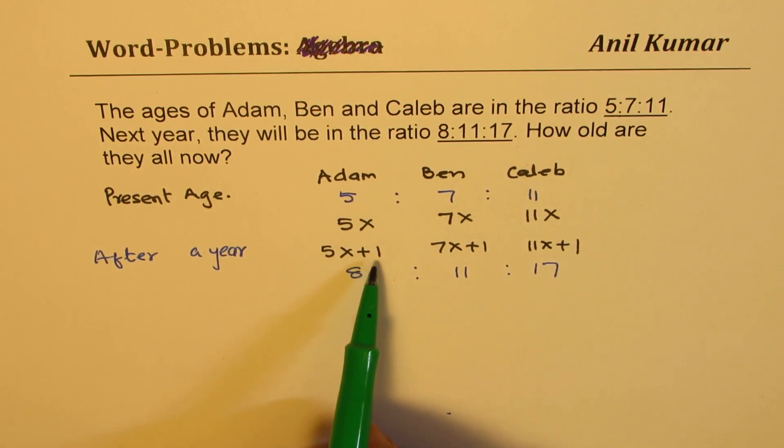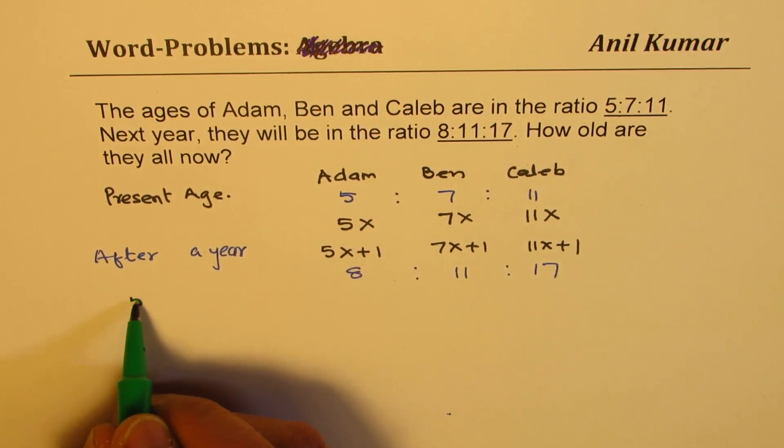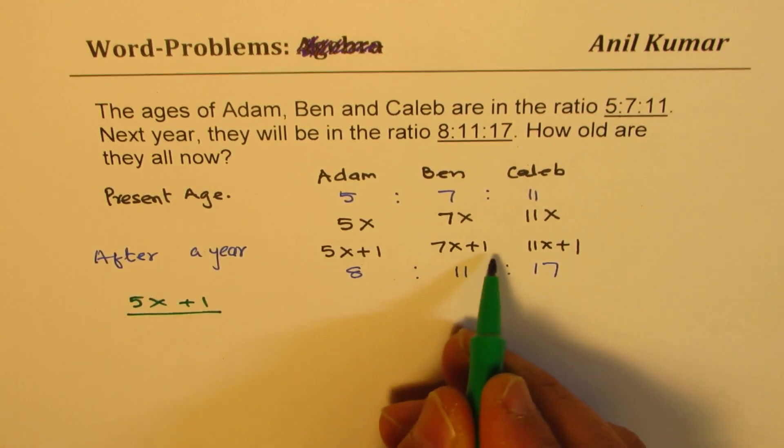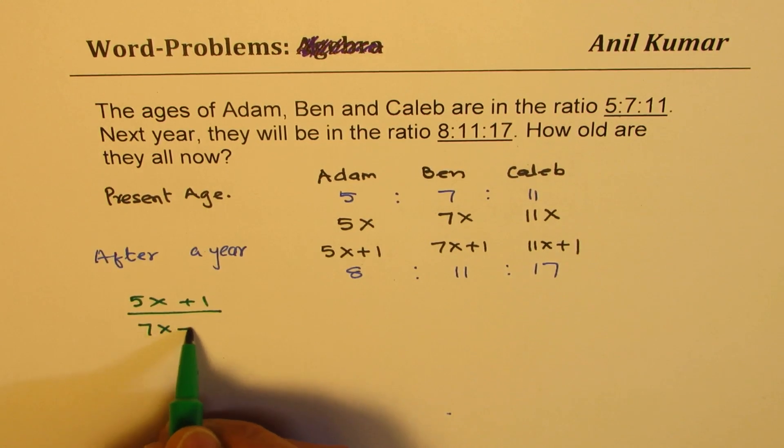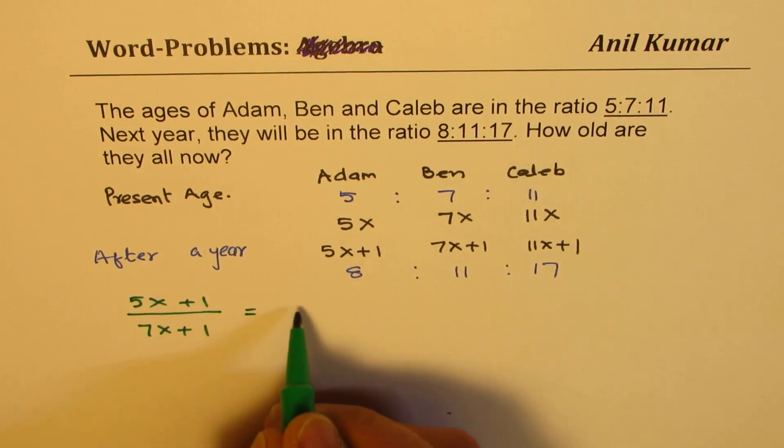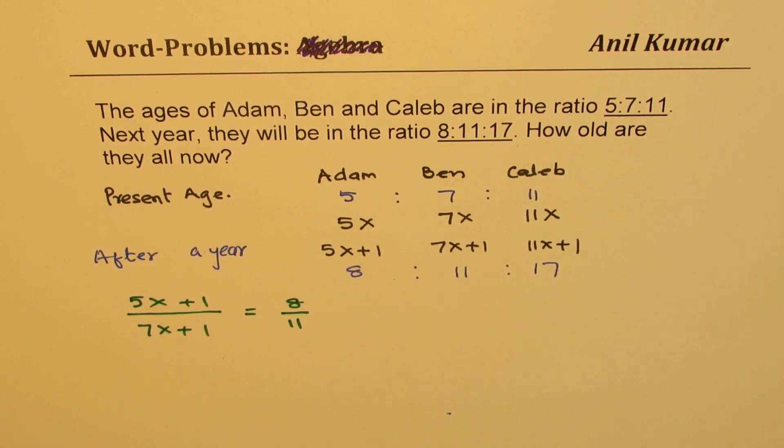So when we say that (5x+1) is to (7x+1) is 8 over 11, that is what we are trying to say. We could write this as (5x+1)/(7x+1) = 8/11. You get it? So we could write it like this.